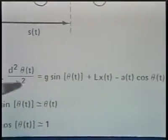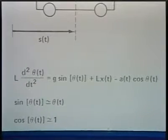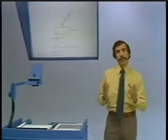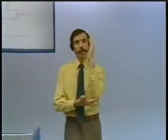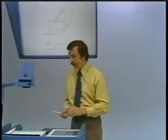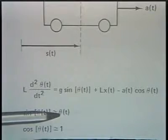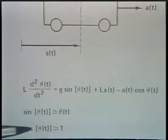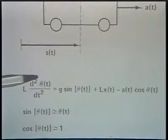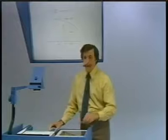This equation, as written, is a nonlinear equation in the angle theta of t. We'd like to linearize it by making the assumption that the angle is very small — close to zero — meaning we're able to keep the rod relatively vertical. Making the assumption that the angle is small, we assume that the sine of the angle is approximately equal to the angle and the cosine is approximately equal to 1. That linearizes the equation, and the resulting linearized form is the one indicated here.